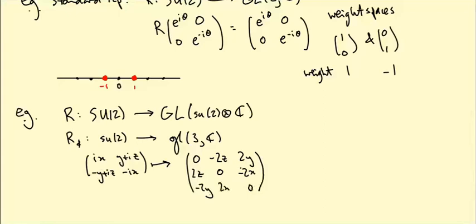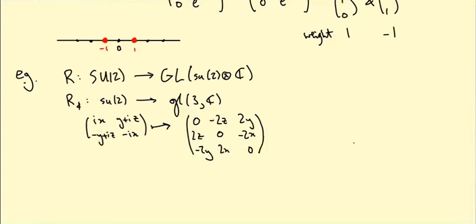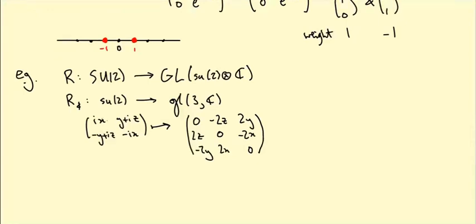This was the map on the level of the algebra as we calculated this. Okay, so I'm interested in this diagonal subgroup. So I can ignore y and z, I can set y and z equal to zero.